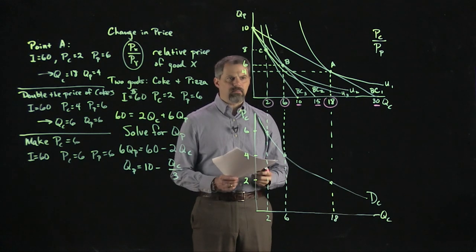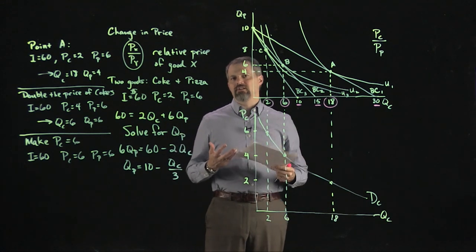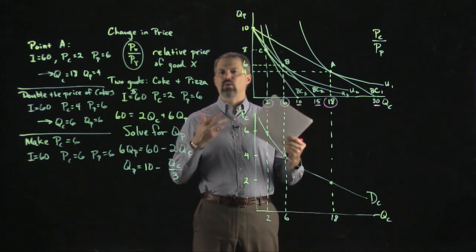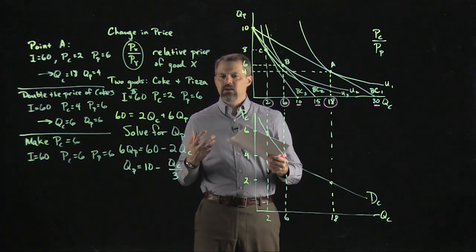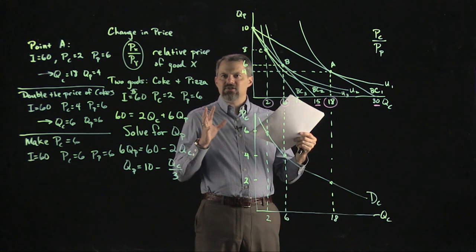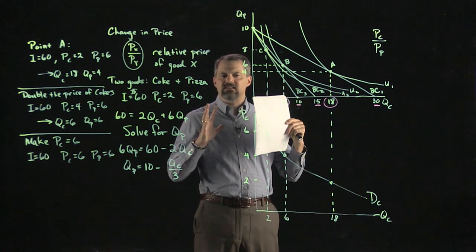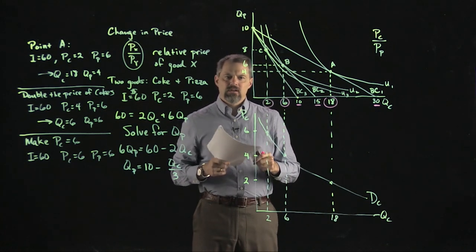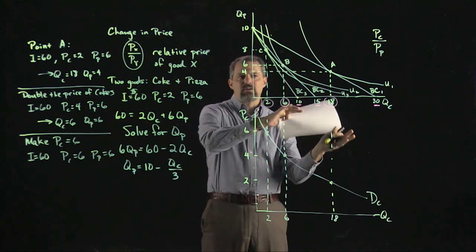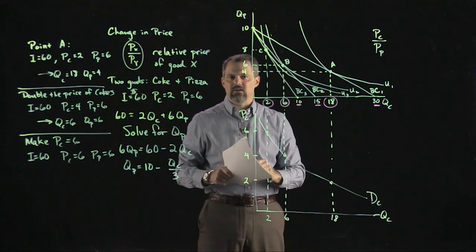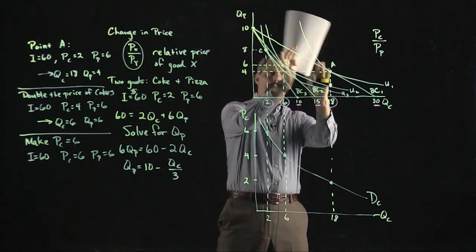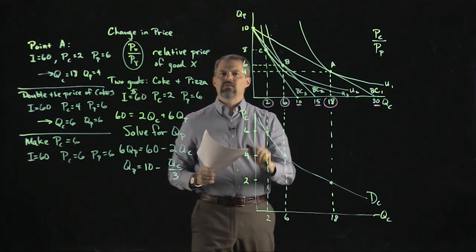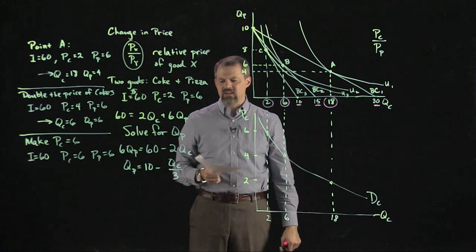Now let's think about what happens if preferences change. If preferences change, the entire utility function shifts — it could become steeper in one direction, or mass shifts from one good to the other. Let's clear this off and take a look at what a change in preferences does to the demand curve.